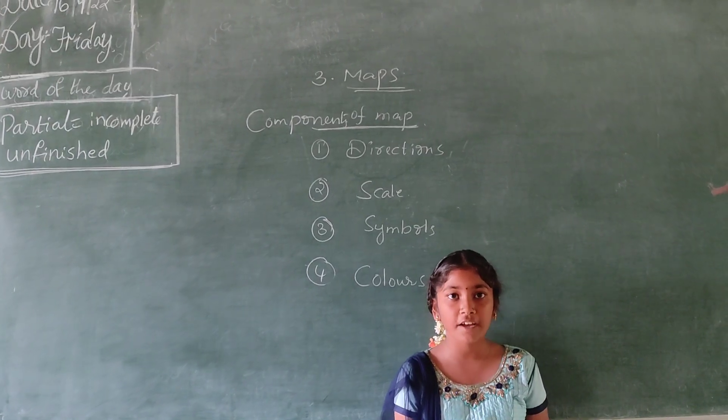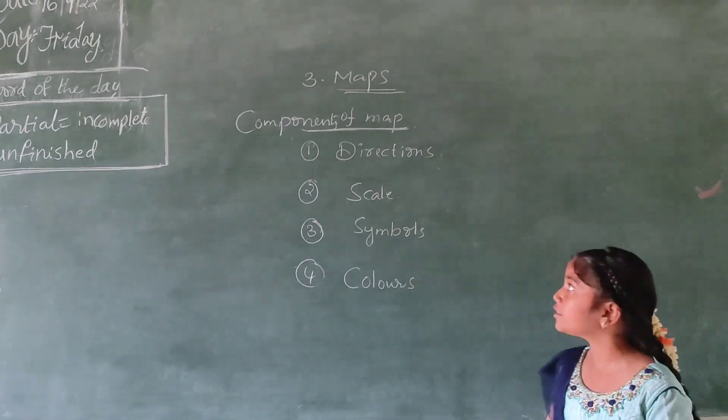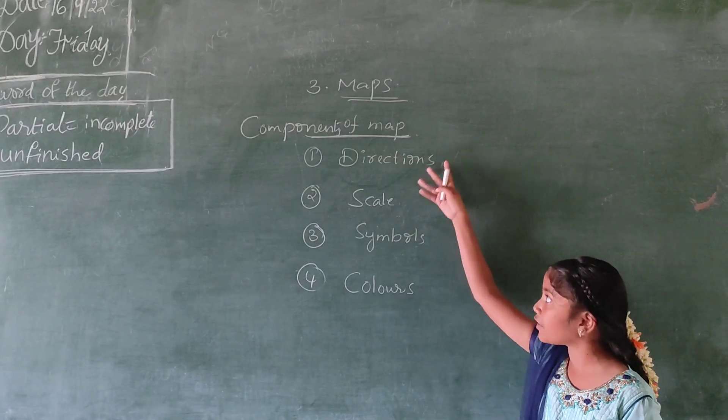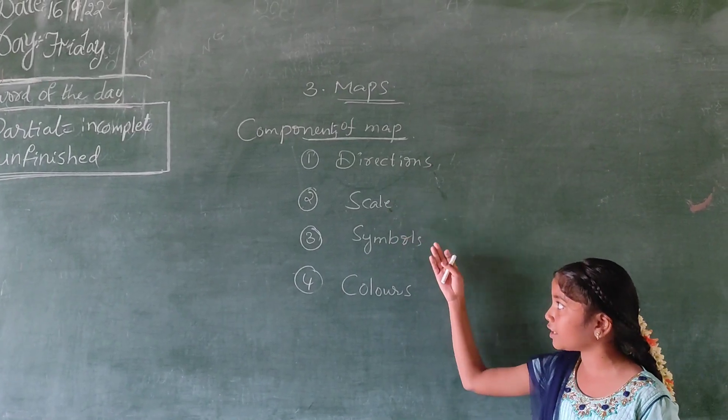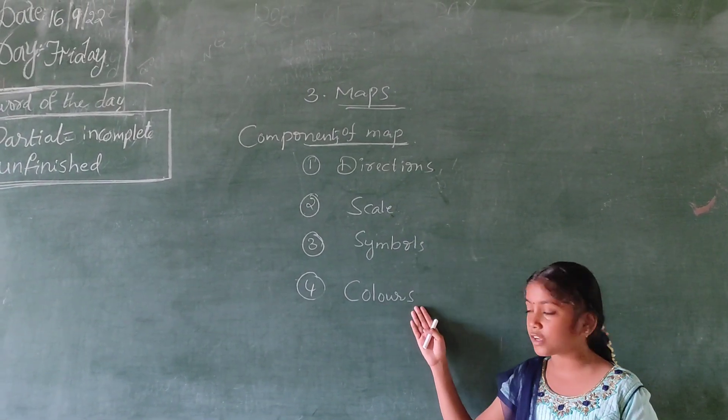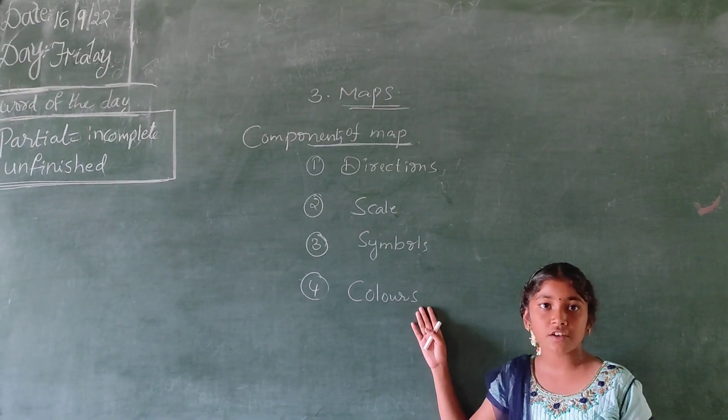Now we are discussing about components of map. One is direction, one is scale, one is symbols, and another one is colors.